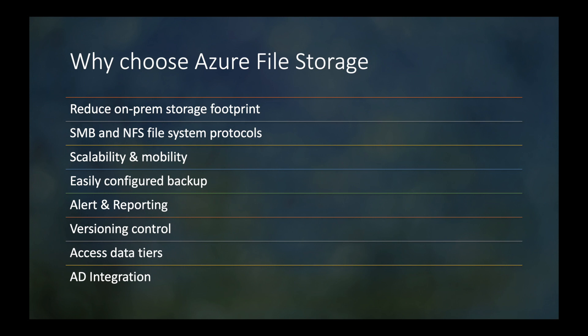You can easily configure backups — your backups are going to be done using the Azure Recovery Service Vault, where you set up a recovery vault and connect it to your storage account. For alerts and reporting, you can set up alerts if you're running out of space — for example, if you're at 100 gigs and need to bump it up. You also have versioning control, which is great — you can see the different versions of a document from this week, last week, or the week before, depending on how far back you want to go.